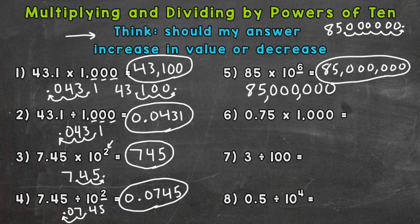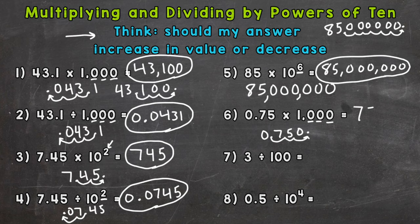Number 6, we have 75 hundredths times 1,000. Standard form — three zeros, move the decimal three times. We're multiplying, so increase the value and move it to the right: 1, 2, 3 — fill with the zero, and the decimal lands at the end, making it a whole number. So we don't need to place that decimal — our answer is 750.